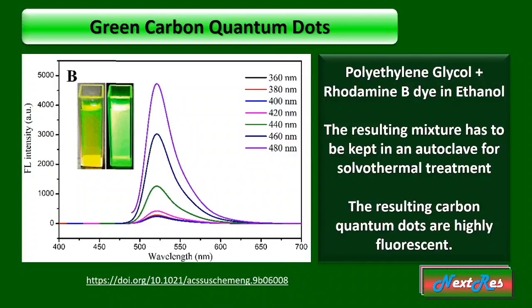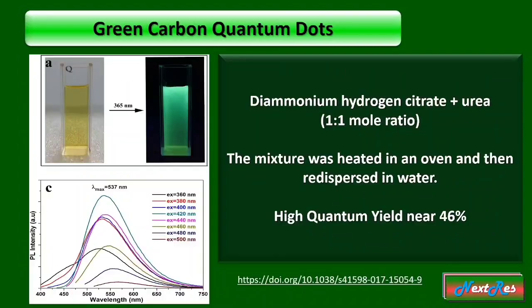Here in the picture you can see the color of the CQDs produced. The color is similar to that of the fluorescent dye. The fluorescence produced is so high that it was used in LED applications.